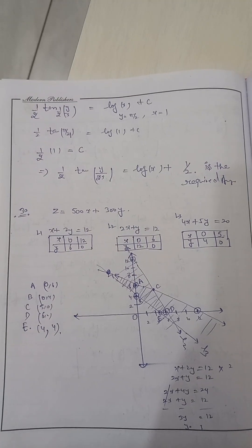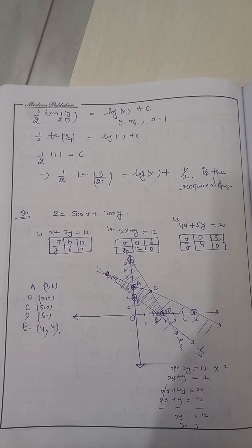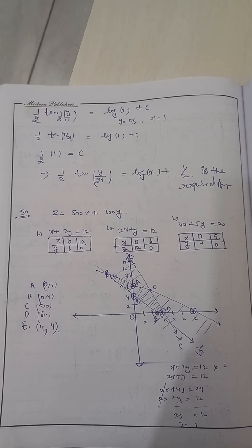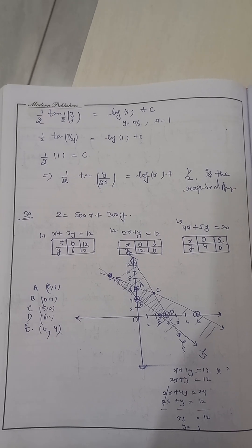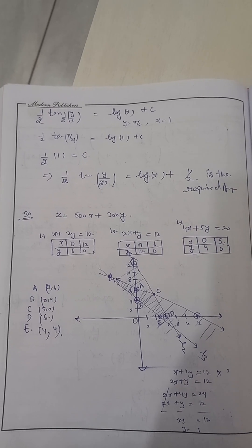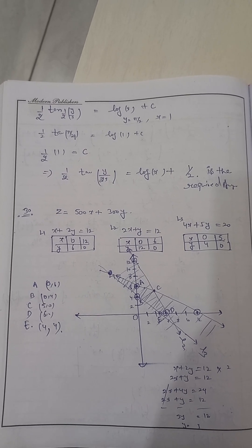So after putting the values, I arrived that c's value is 1 by 2. And we just replace the c's value in the above equation. Above equation means 1 by 2, tan 1 by 2, y upon x equals to log x plus c. Here c is 1 by 2. So I just replace the value of c and I will get the answer.